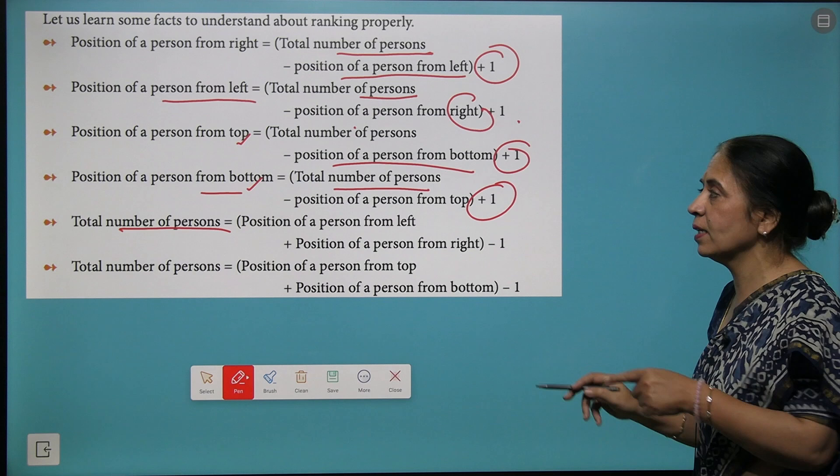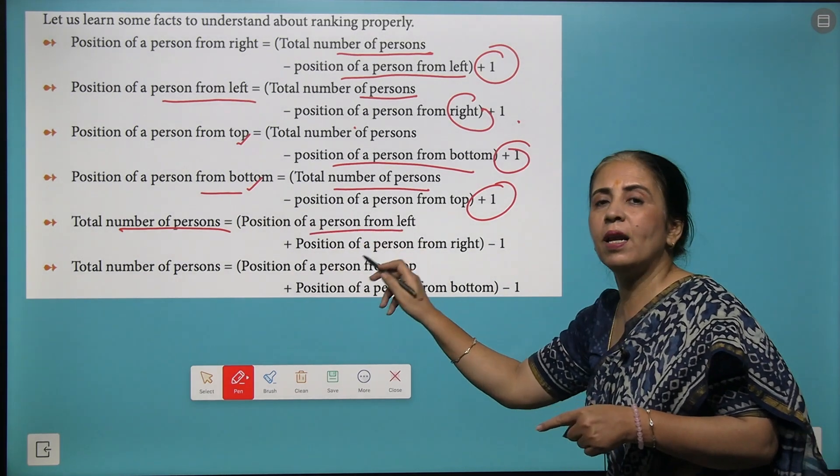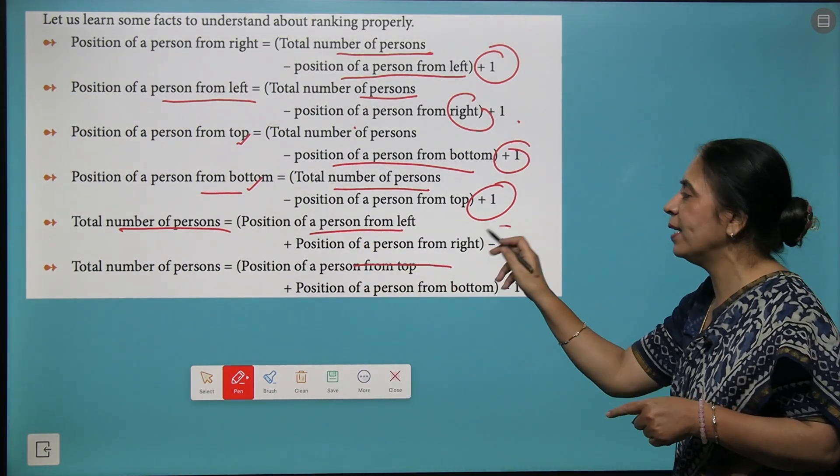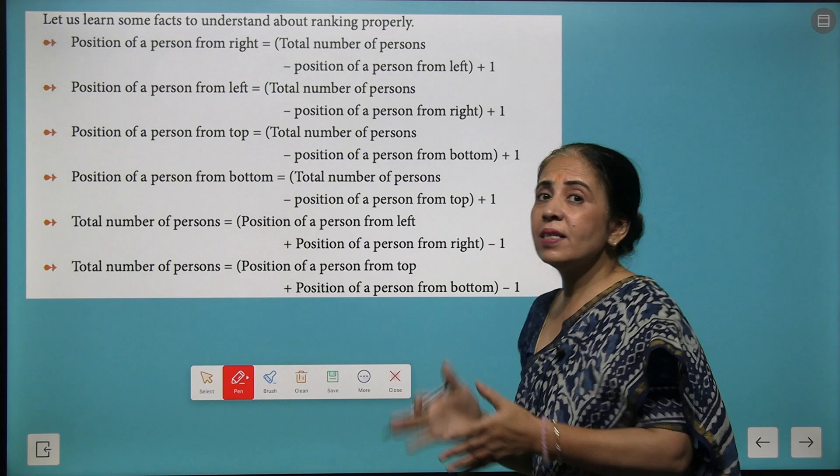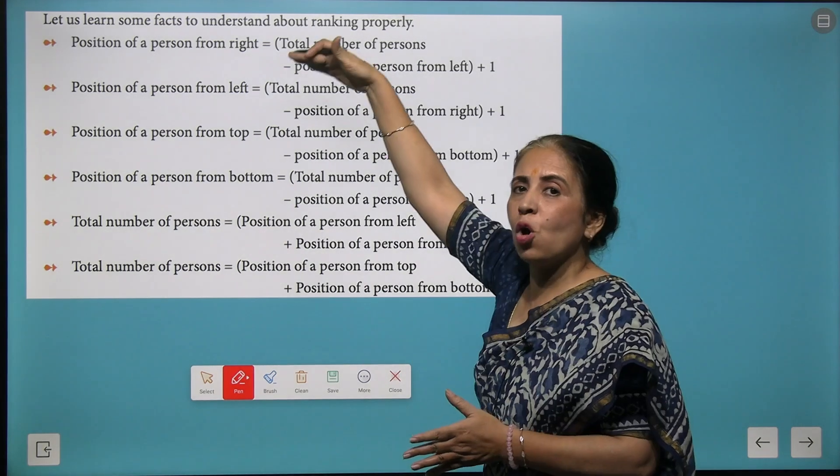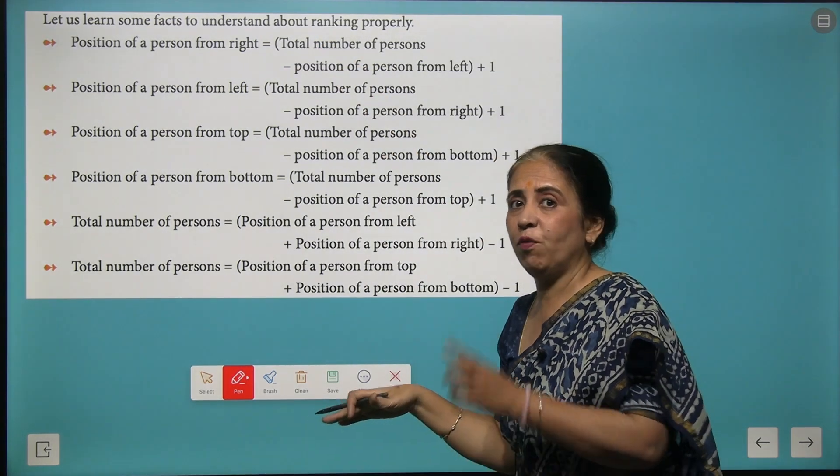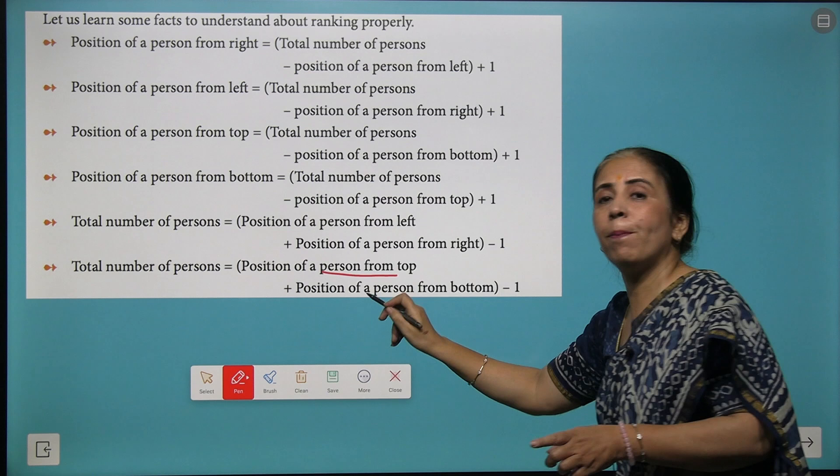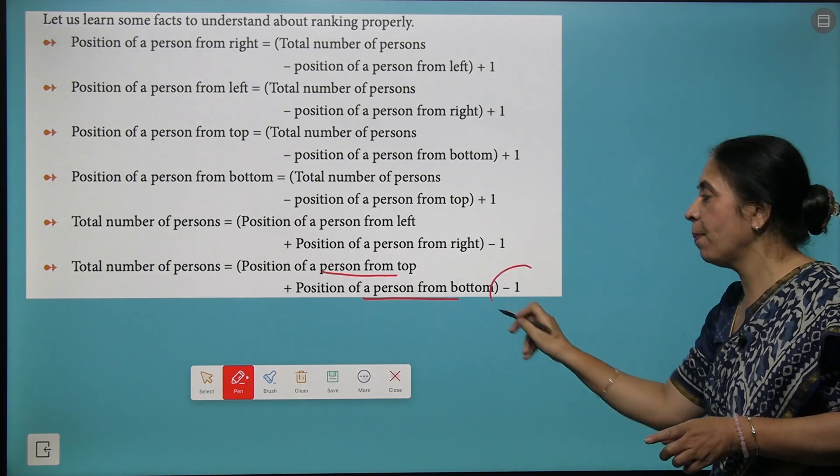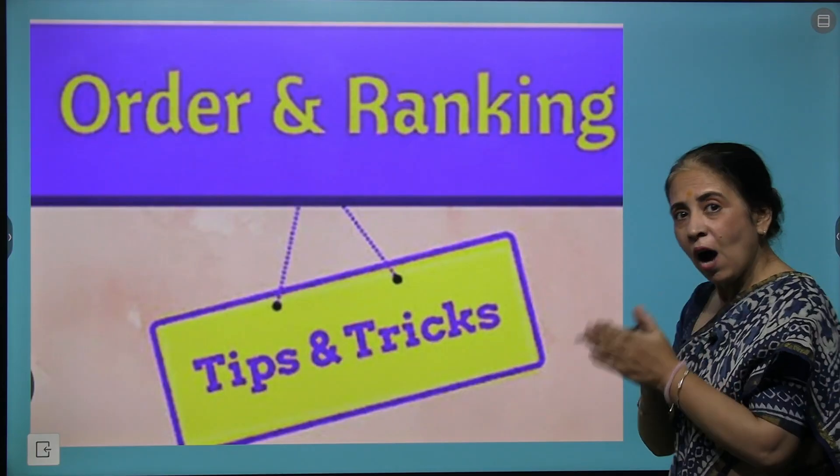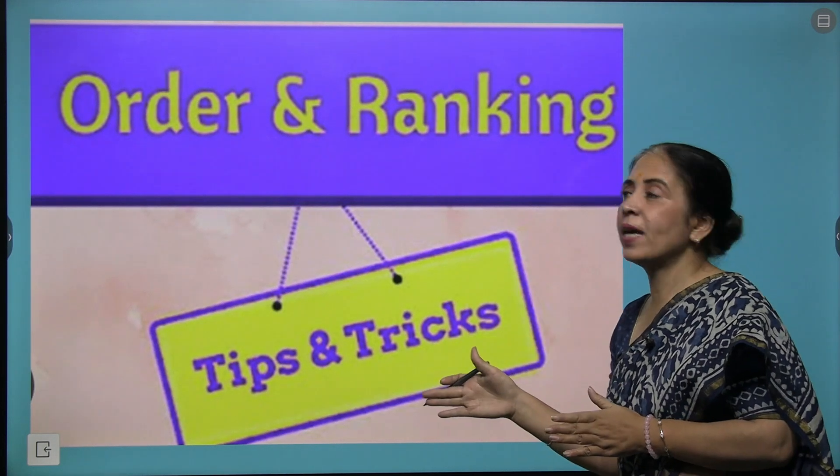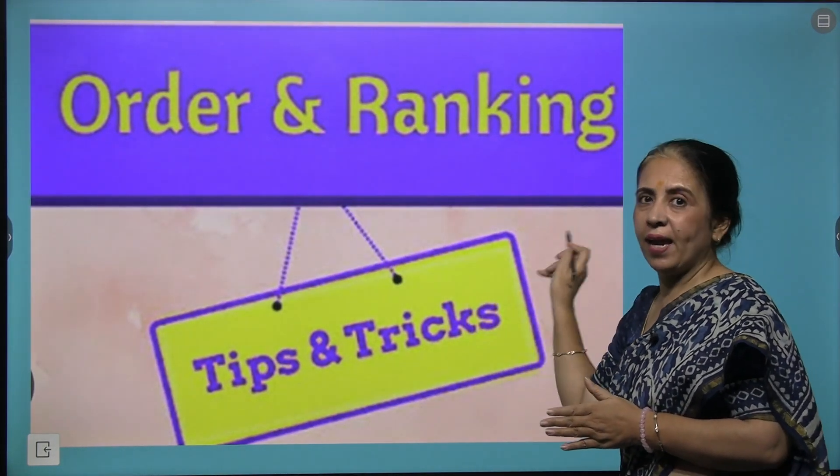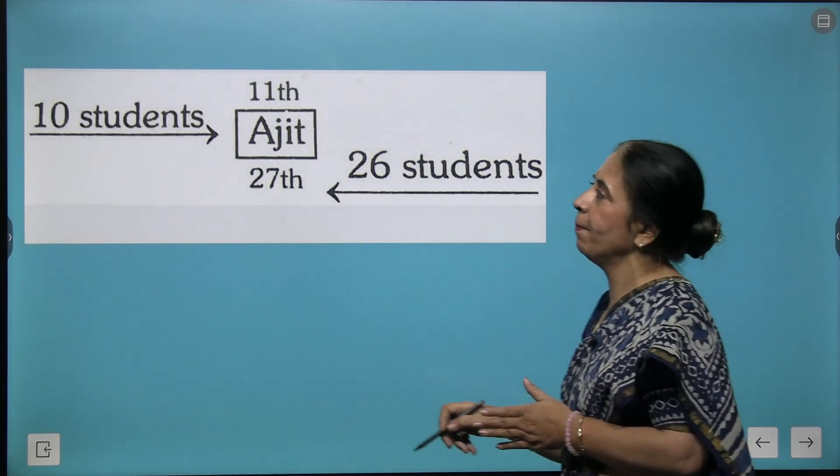If you need to know the total number of persons, it's position from the left plus position from the right minus 1. The same thing is applicable from top and bottom as well: position from the top plus position from the bottom minus 1. After understanding the tips and tricks for order and ranking, let's understand the example.